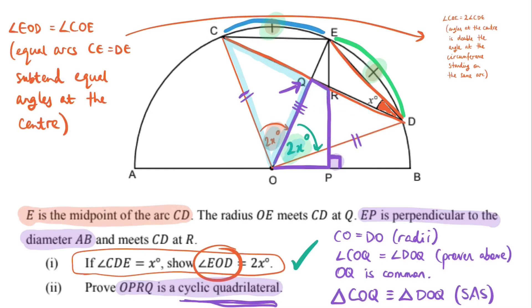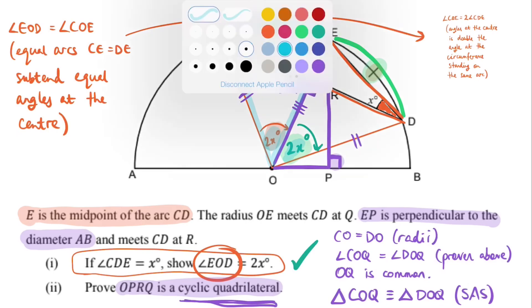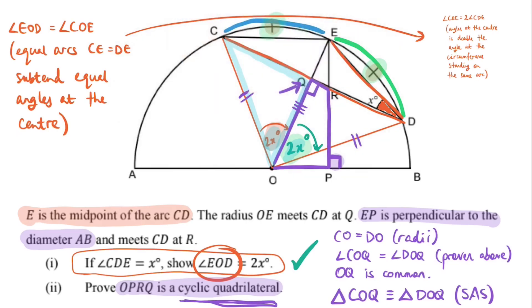So, I can pop my 90 degrees in there after having proven it, and I can complete my proof by saying, well, the angle here is equal to the exterior angle. So, the exterior angle is equal to the opposite interior angle. That's a property that cyclic quadrilaterals exhibit. And so, ta-da!